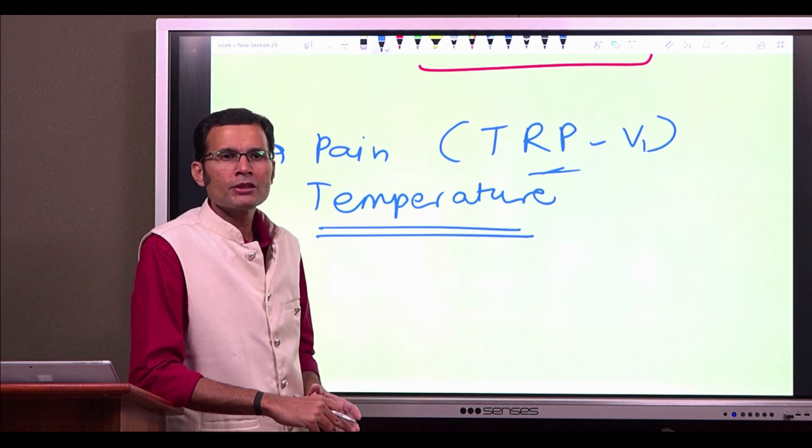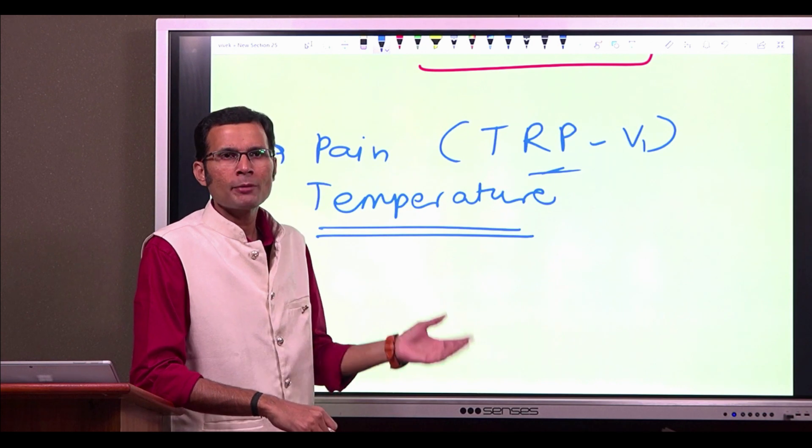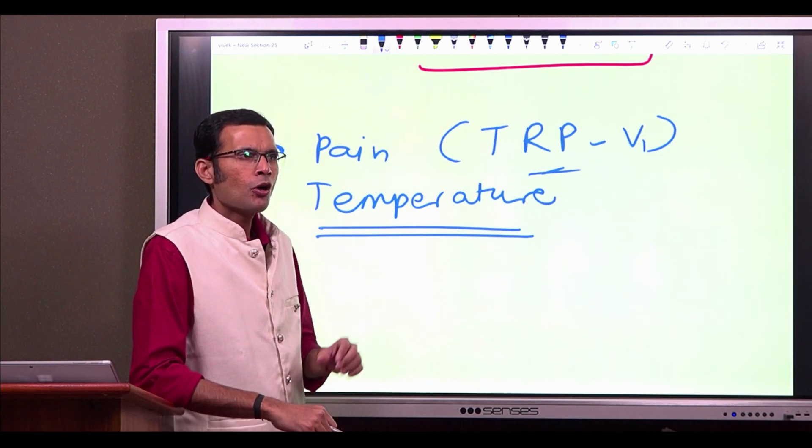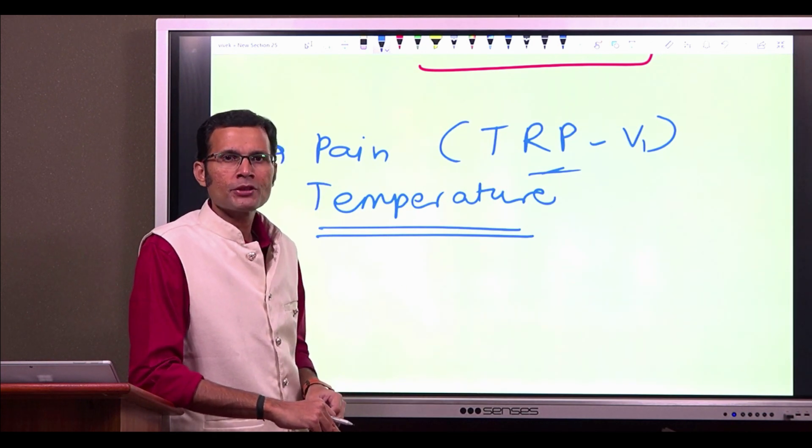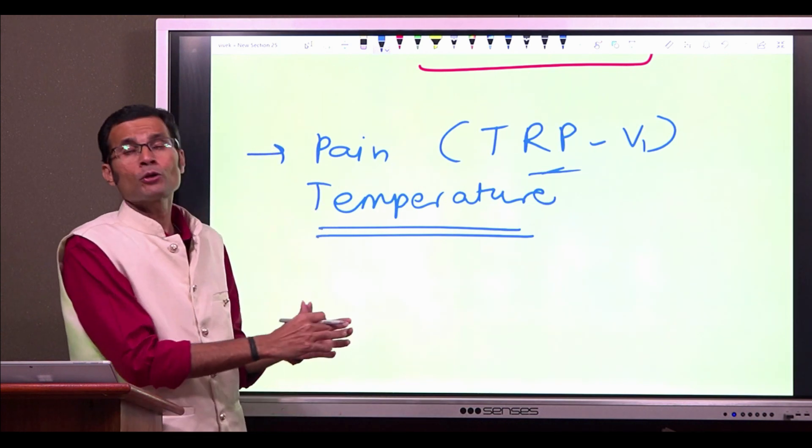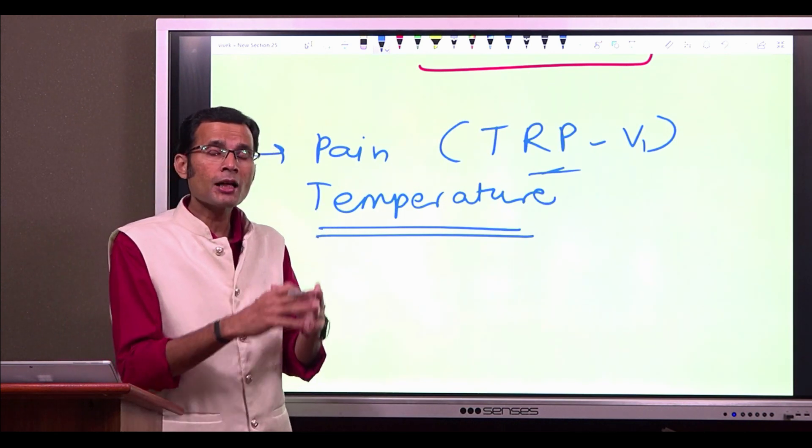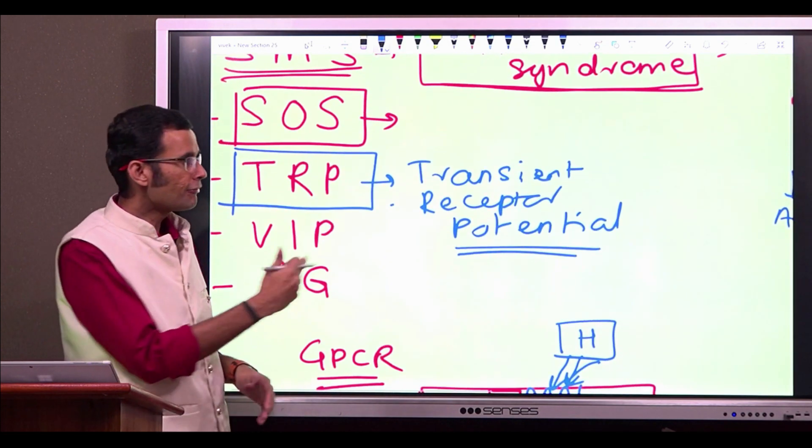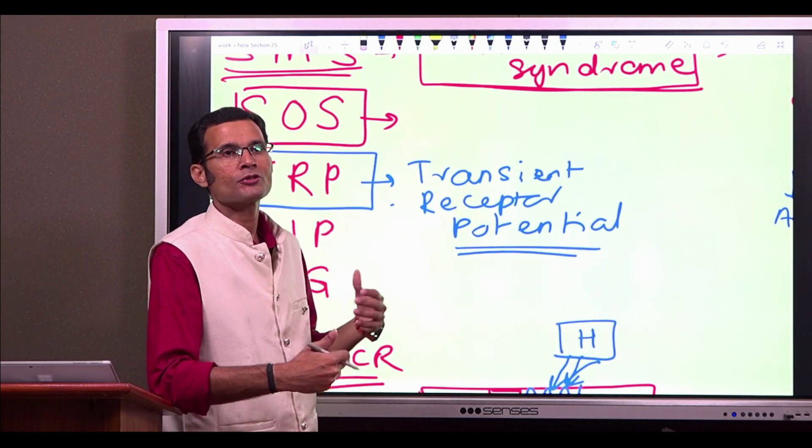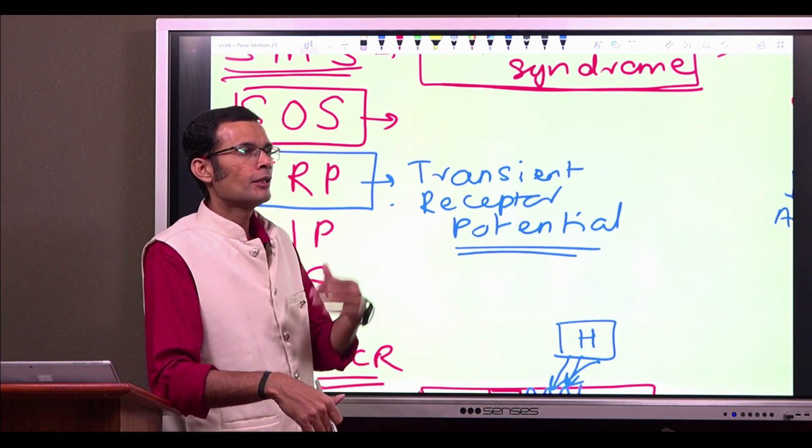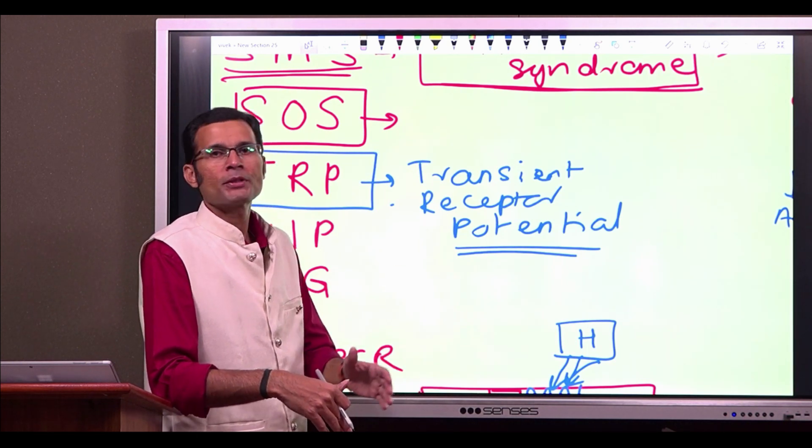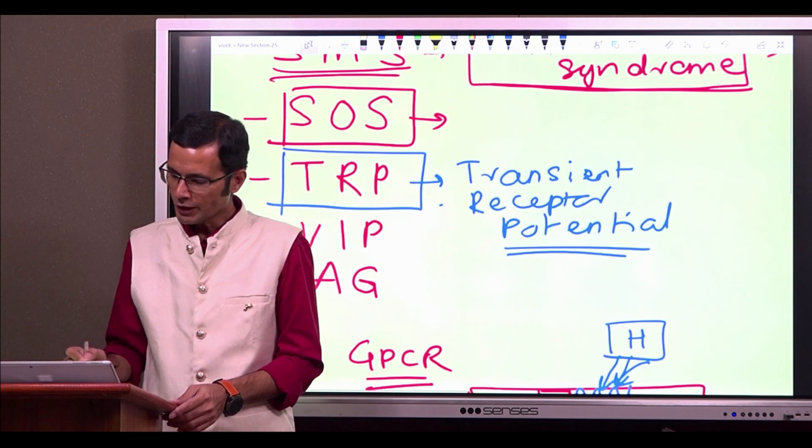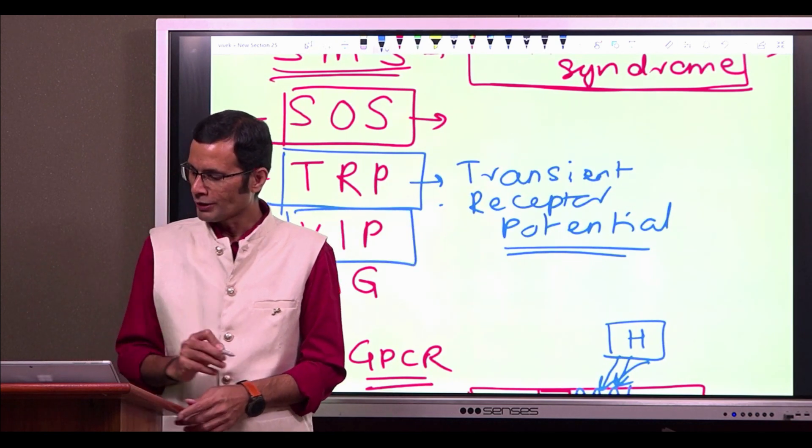Temperature receptors like CMR, cold and menthol sensitive receptor or the other receptors for temperature sense, they also belong to this TRP super family. The TRP, in physiology, it stands for transient receptor potential, which is a super family of receptors. Generally, it includes pain and temperature receptors.